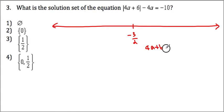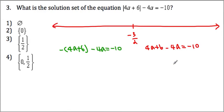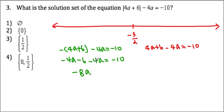When it's positive, it doesn't change sign, so minus 4a equals negative 10. When this portion is negative, we rewrite it as negative 4a plus 6 minus 4a equals negative 10. Solving: negative 4a minus 6 minus 4a equals negative 10, giving negative 8a equals negative 4, so a equals 1 half. But we're looking at the interval where a is less than negative 3 over 2, so that wouldn't make sense. Plugging in 1 half into the original equation also doesn't work.